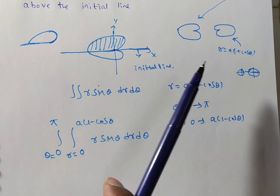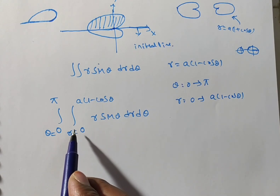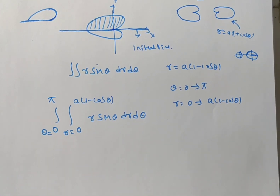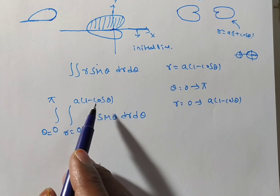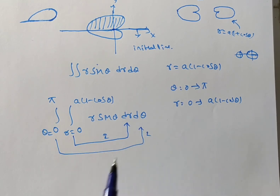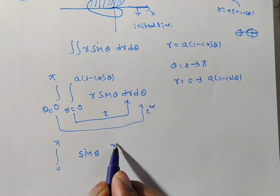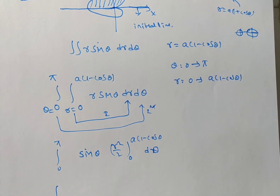The cardioid limits are now clear. Since r is the dependent variable, we integrate with respect to r first. sin θ is independent of r, so the r integration gives r²/2. Applying limits 0 to a(1 - cos θ), we get (1/2) a² (1 - cos θ)². The integral becomes (1/2) a² ∫₀^π sin θ (1 - cos θ)² dθ.